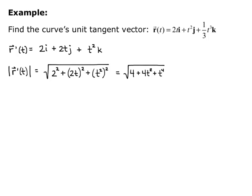Which I can actually factor. That's a perfect square trinomial. So this is equal to the square root of parentheses 2 plus t squared, close parentheses, quantity squared. Now the square root and the square can cancel each other out, so I just get 2 plus t squared. So there's my magnitude of r prime of t.